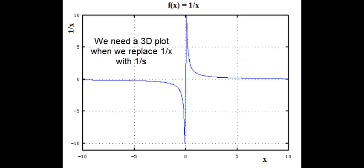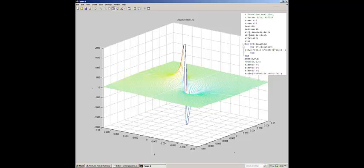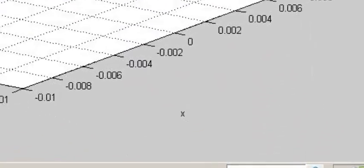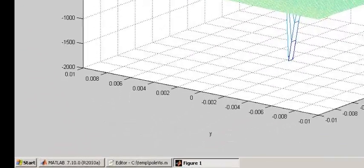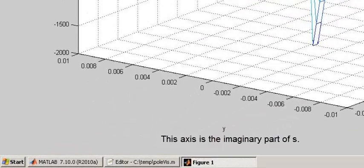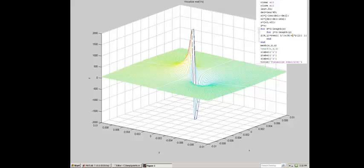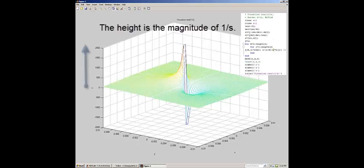We need a three-dimensional plot when we replace 1 over X with 1 over S. This three-dimensional plot was produced in MATLAB. This is the real part of S. This is the imaginary part of S. The vertical axis is the height, or magnitude, of 1 over S.